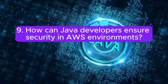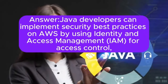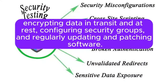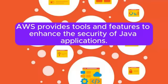Question 9: How can Java developers ensure security in AWS environments? Java developers can implement security best practices on AWS by using Identity and Access Management IAM for access control, encrypting data in transit and at rest, configuring security groups, and regularly updating and patching software. AWS provides tools and features to enhance the security of Java applications.